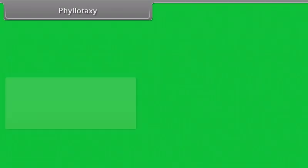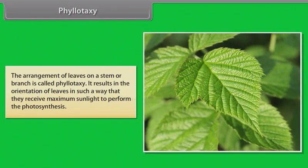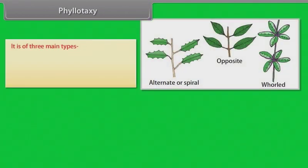Phyllotaxy: The arrangement of leaves on a stem or branch is called phyllotaxy. It results in the orientation of leaves in such a way that they receive maximum sunlight to perform the photosynthesis. It is of three main types.